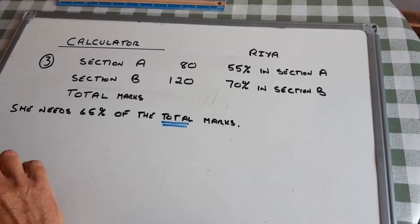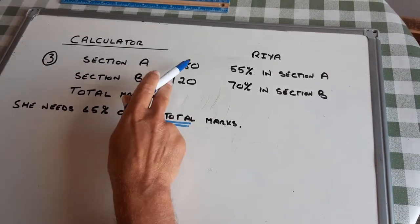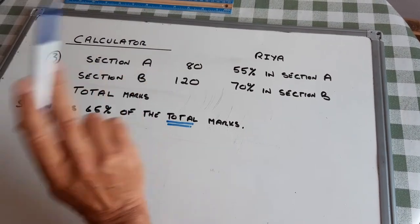I noticed in the question, section A, 80 marks, section B, 120.